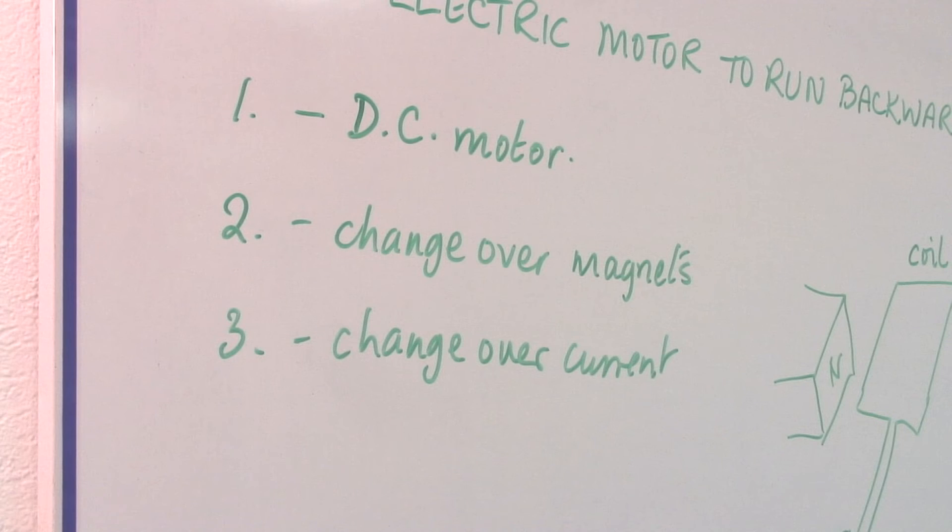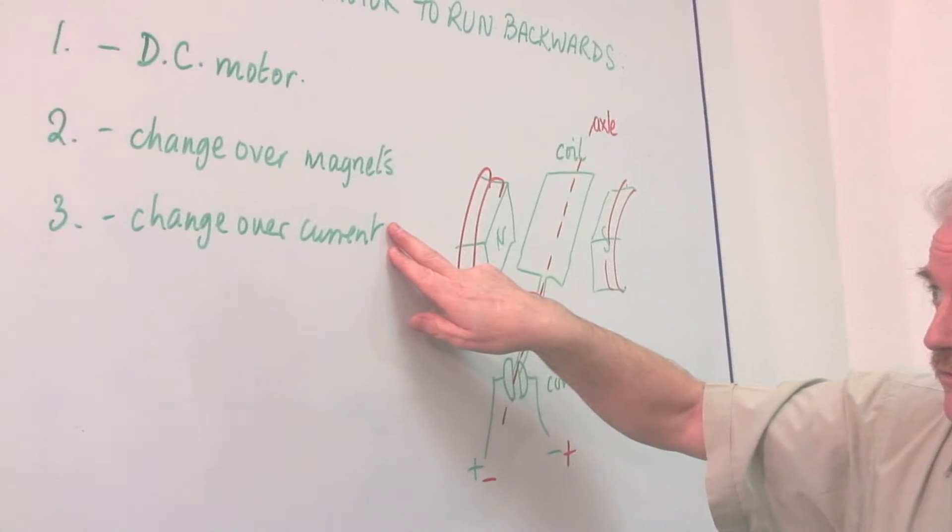So with the DC motor, you change over the magnets, or you change over the current.